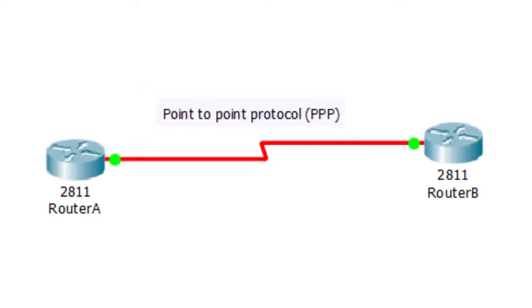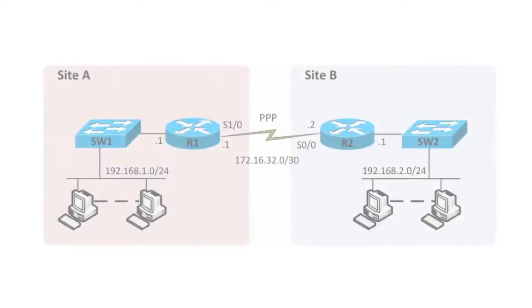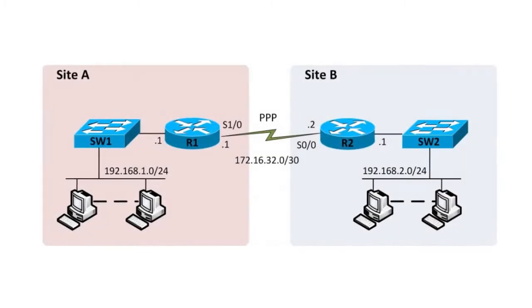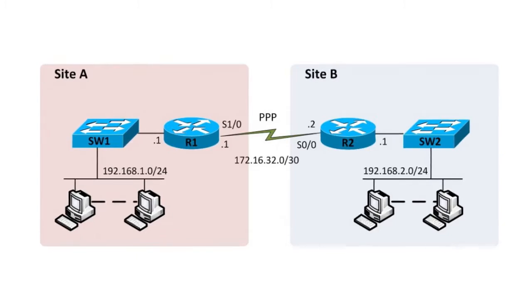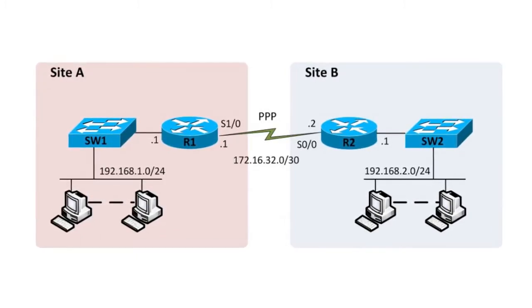These Point-to-Point Protocol frames can be transmitted over serial transmission lines, such as plain old telephone service and integrated services digital network, and packet-switched networks, such as X.25.